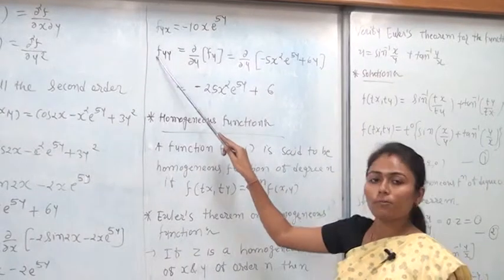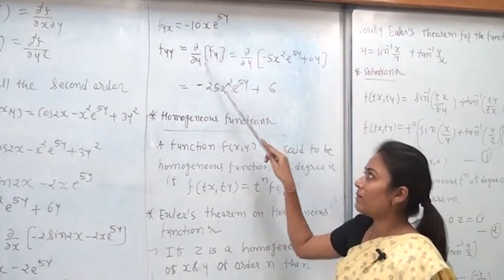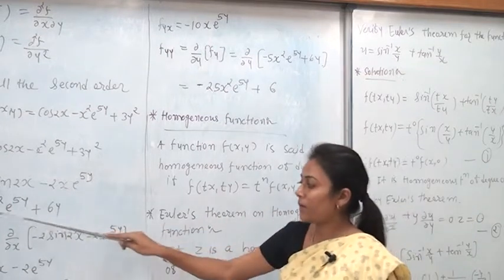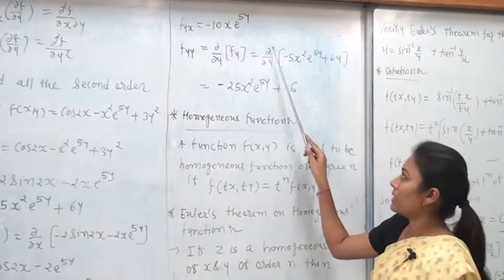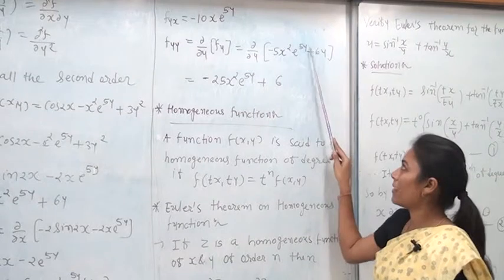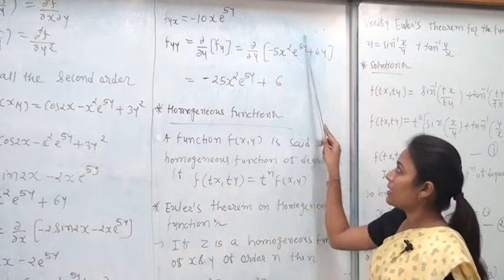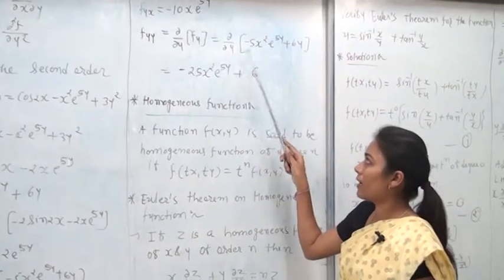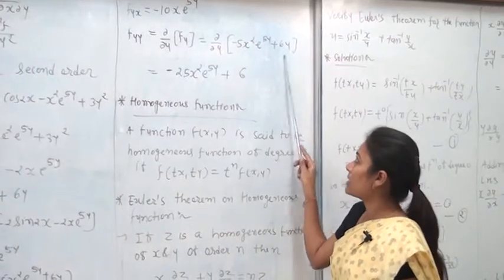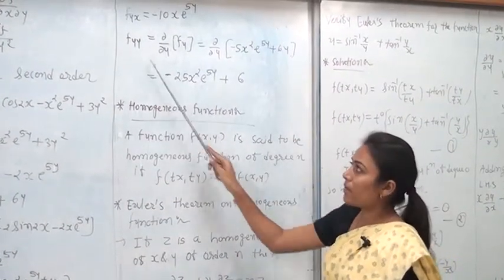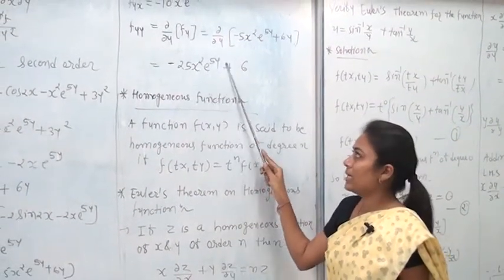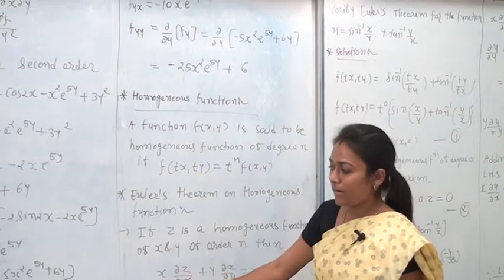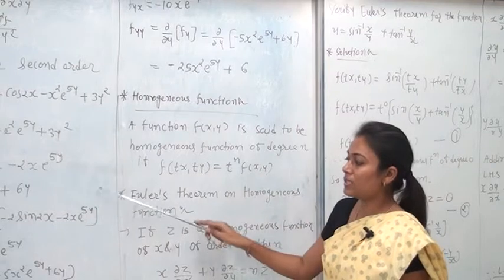For f_yy: differentiate f_y = −5x²e^(5y) + 6y with respect to y. x² is constant, so derivative of −5x²e^(5y) gives −25x²e^(5y). Derivative of 6y with respect to y is 6. Therefore f_yy = −25x²e^(5y) + 6. We have now found all four second-order derivatives: f_xx, f_xy, f_yx, and f_yy.